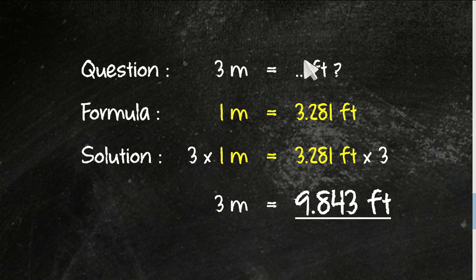So to make an equation, we need to put 3 here and 3 here as well. Now we have 3 times 1 equals 3, just like the question, 3 meters. 3 times 3.281 feet equals 9.843 feet.